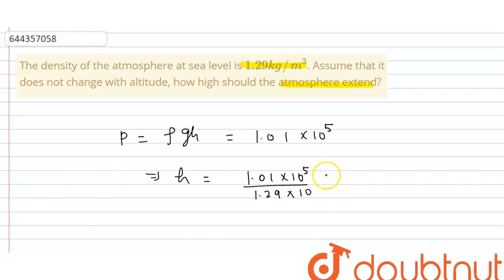So this is equals to 7.829 into 10 to the power 3 meter, or we can say this is equals to 7.829 kilometer. So I hope you understood the explanation, thank you.